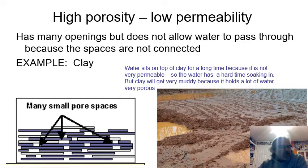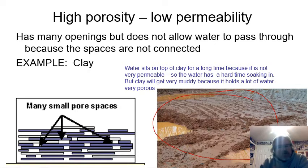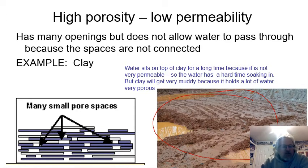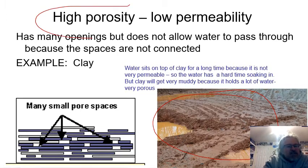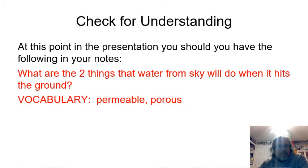Clay, on the other hand, is highly porous — it has a lot of open space and can hold a lot of water — but the spaces aren't very well connected, so water doesn't go in very quickly or easily. When it rains, water sits on clay and clay stays muddy for a very long time. So clay is highly porous but not very permeable; the water doesn't move through it very quickly.